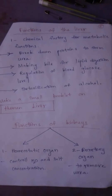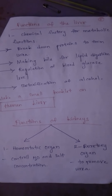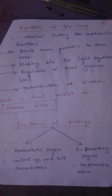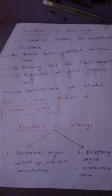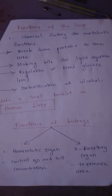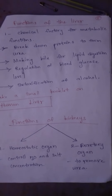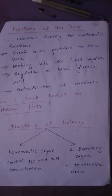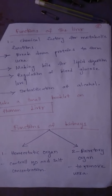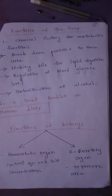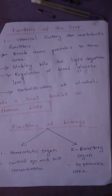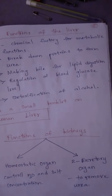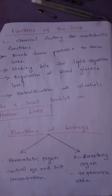The liver is like a chemical factory for metabolic functions. There are several functions: breakdown of proteins to form urea. Proteins can break down into amino acids, and amino acids can further break down into urea.